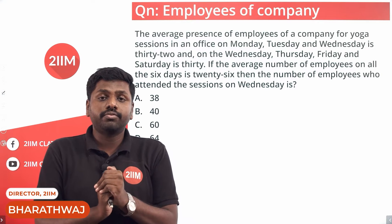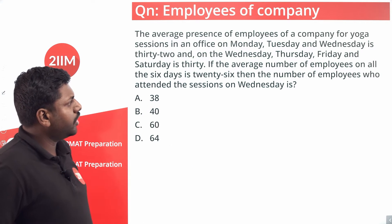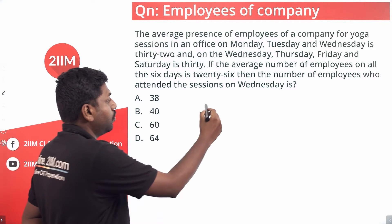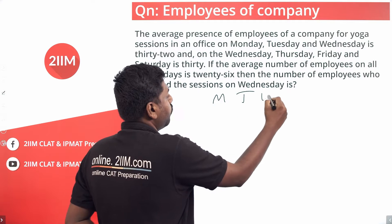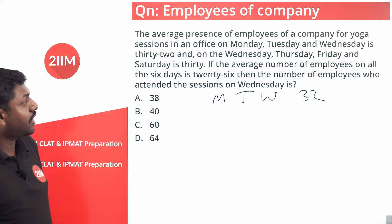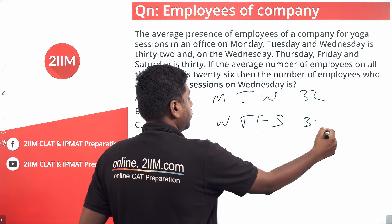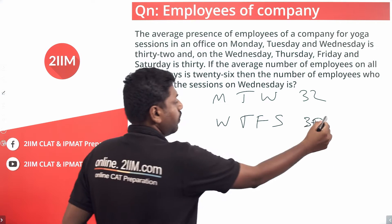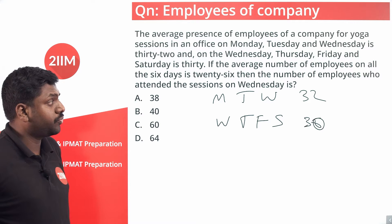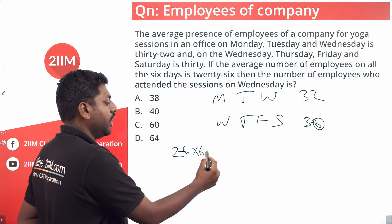Interesting question from an IPM Rotak paper: the average presence of employees of a company for a yoga session on Monday, Tuesday, and Wednesday is 32. The average for Wednesday, Thursday, Friday, and Saturday is 30. The average number of employees on all six days is 26.